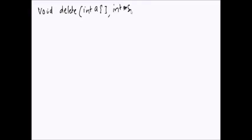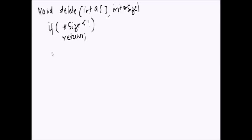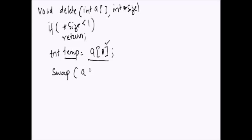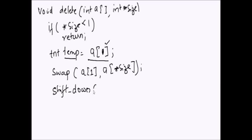Let's see the implementation of delete. The delete function takes integer array a and integer size. If size is less than 1, there are no elements — just return. Otherwise, save the root: temp = a[1]. Swap a[1] with a[size], the last element. Then call shiftDown(a, size - 1) since the size is now 1 less.